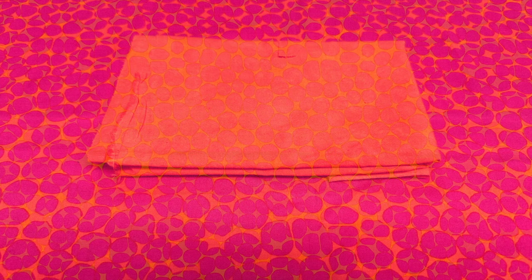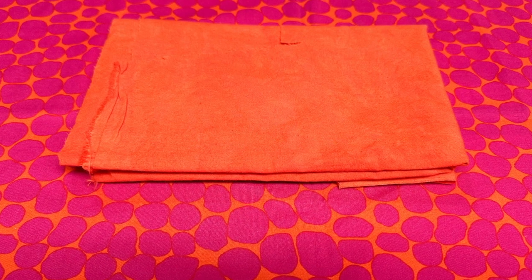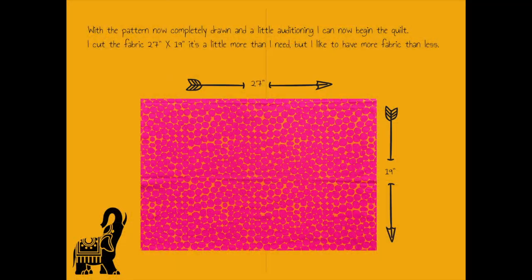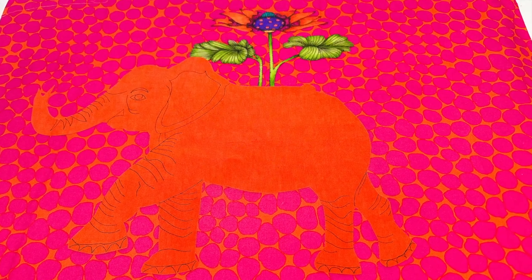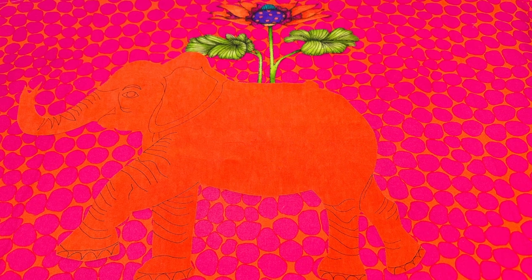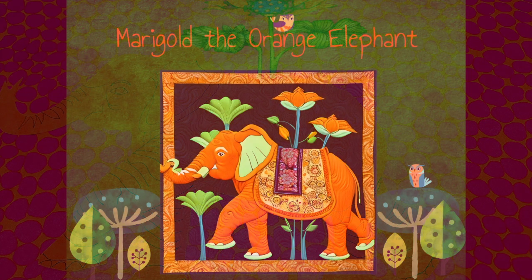I absolutely love, love, love orange and pink — I think it looks fantastic. I have some wonderful orange fabric that's going to look great. You have to be careful with oranges, but this one fits the background perfectly. With the pattern now completely drawn and a little auditioning done, I've cut the fabric 27 inches by 19 — more than I need, but I like to do it that way. Here's a little teaser of what it's going to look like. That's going to be the end of this little session.